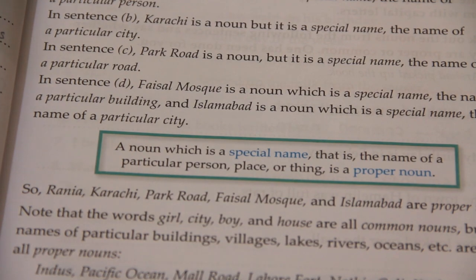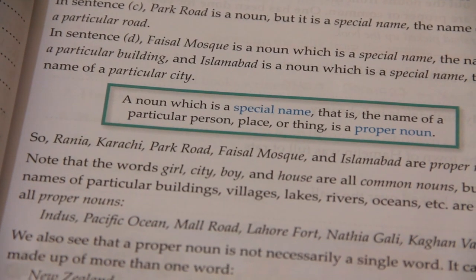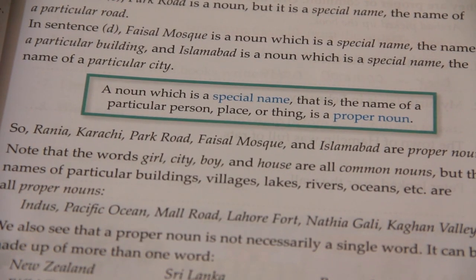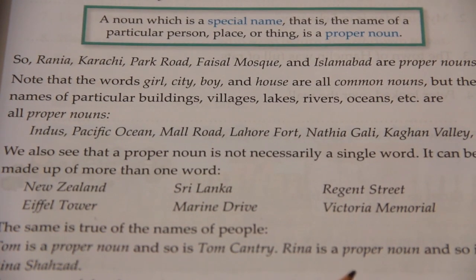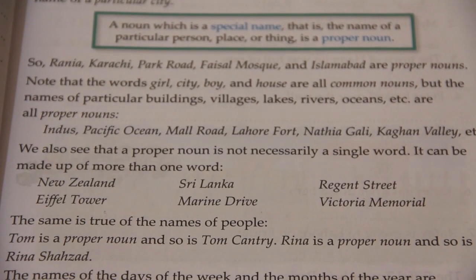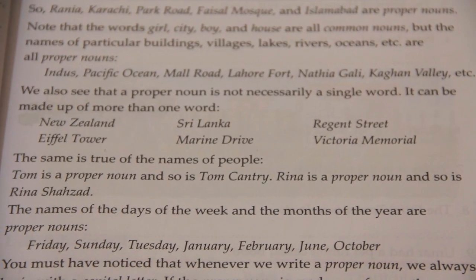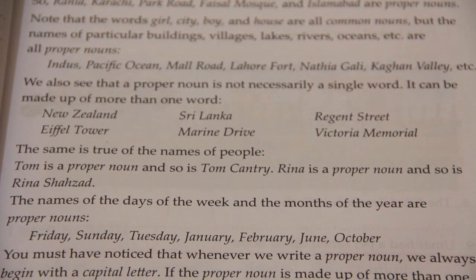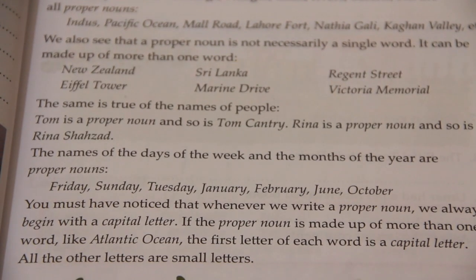The same is true of the name of a pupil. Tom is a proper noun and so is Tom's country. Reena is a proper noun and so is Reena Shahzad. The names of the days of the week and the months of the year are proper nouns: Friday, Sunday, Tuesday, January, February, June, October — these are the proper nouns.